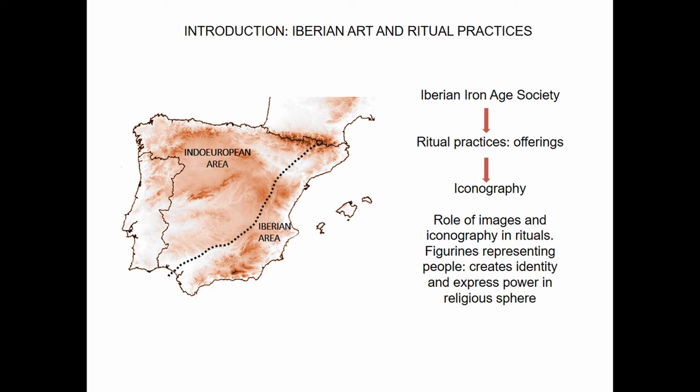This is the Iberian Iron Age area in which we place different social groups — local, territorial groups in the shape of city-states or regional organizations — in which the most important urban settlements are organizing the territory. It is not a unified polity but different small polities in this area.